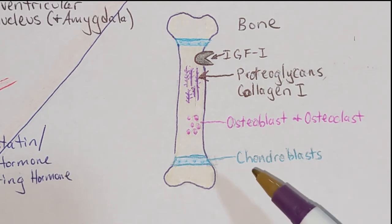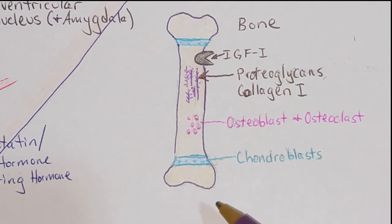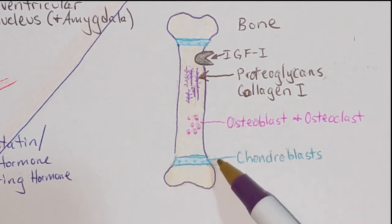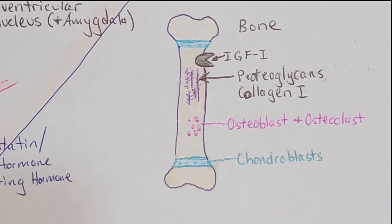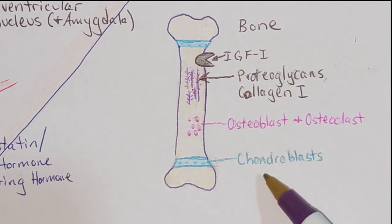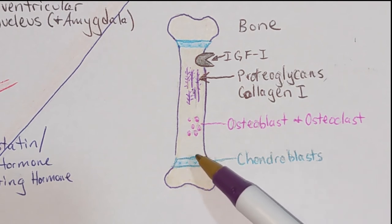IGF-1 also increases the activity of chondroblasts — the cartilage-building cells during growth. From childhood into early adolescence, chondroblasts build cartilage between the diaphysis and the epiphysis of a long bone, commonly called the growth plates, allowing bones to grow in both directions. IGF-1 is responsible for increasing chondroblast activity and therefore increasing endochondral ossification — taking this cartilage and converting it into bone.